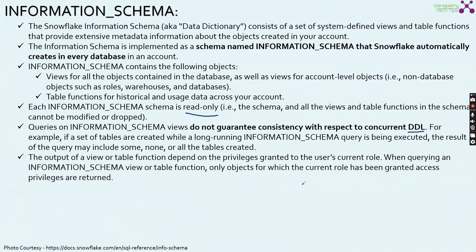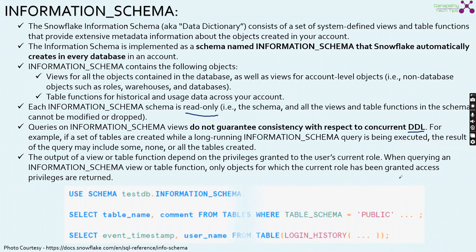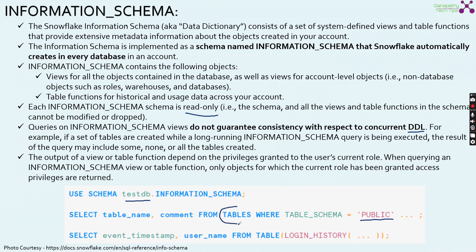When querying the information schema view or table function, only objects for which the current role has been granted access privileges are returned. So even though the information schema contains all the information, the output of your query is completely dependent on the privileges granted to the user's current role. For example, using the schema as testdb.information_schema, you can select table name and comment from tables where table schema equals public. This returns a list of all table names and comments for those tables under the public schema within the test DB. The tables view is the specific view from the information schema which holds all the information about the tables.